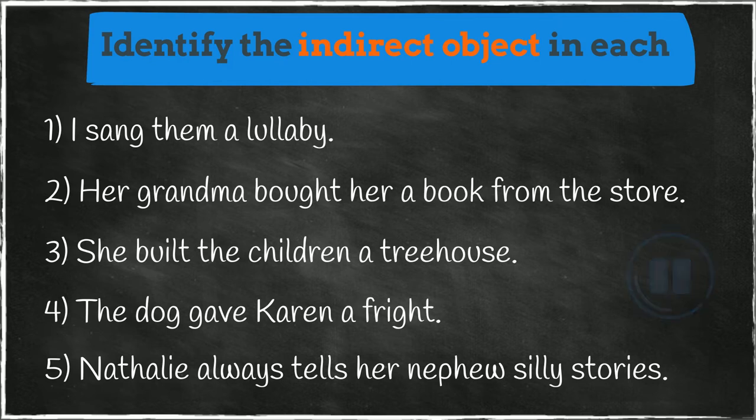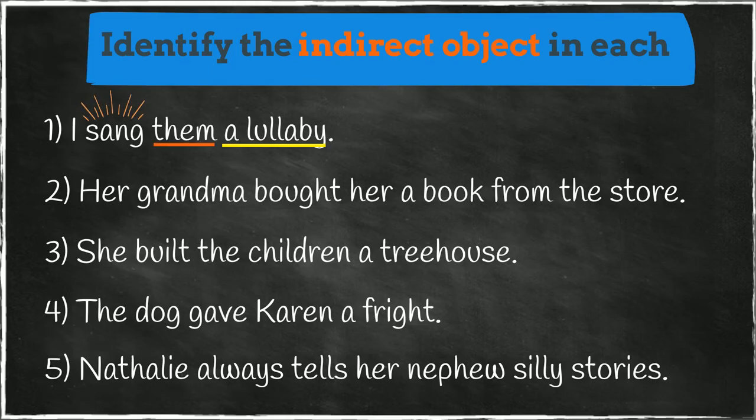Number one. The direct object is a lullaby, because this is receiving the action, which is sang. Who or what is receiving the direct object? Them. The indirect object is them.